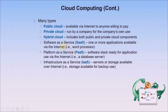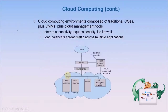Cloud service models include Software as a Service (SaaS), where one or more applications are available via the internet; Platform as a Service (PaaS), where software is ready for application use via the internet; Infrastructure as a Service (IaaS), where servers or storage are available over the internet; and IT as a Service (ITaaS). Cloud environments are composed of traditional OSes plus virtual machine managers (VMMs) plus cloud management tools. Internet connectivity requires security like firewalls, and load balancers spread traffic across multiple applications.